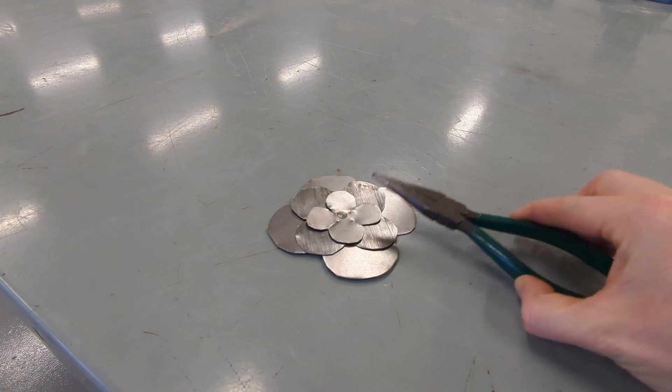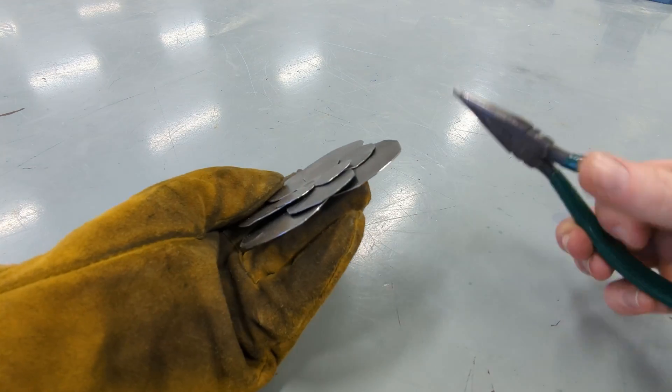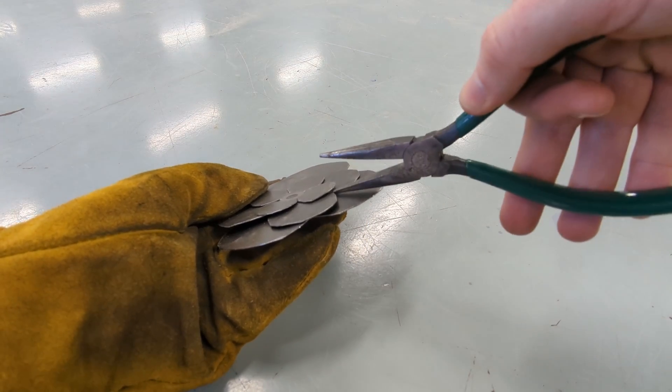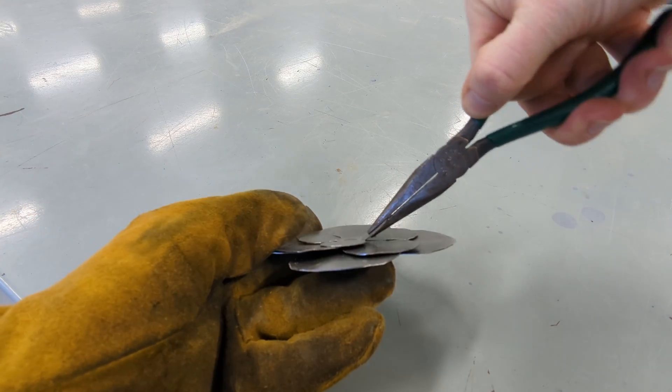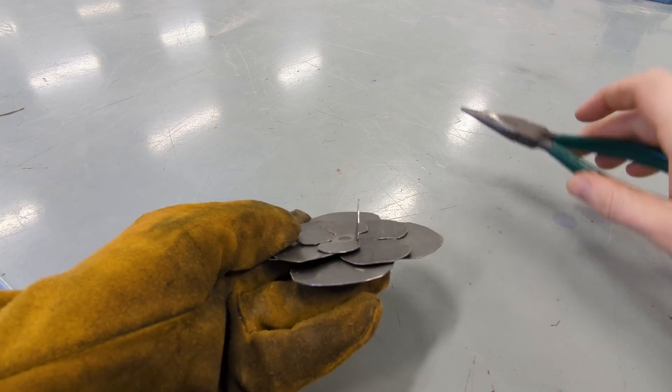With your parts fastened together, it's time to form it into a flower. Grab your pliers, preferably needle nose, and a glove to keep your hand from getting cut up while you hold the metal. You're going to start with your smallest layer, stick your pliers underneath one of the petals as far as you can go, then bend up to 90 degrees.